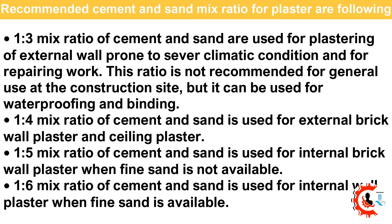Recommended cement and sand mix ratios for plaster are as follows. 1:3 mix ratio is used for plastering of external walls prone to severe climatic conditions and for repairing work; it is not recommended for general use but can be used for waterproofing and binding. 1:4 is used for external brick wall plaster and ceiling plaster. 1:5 is used for internal brick wall plaster when fine sand is not available. 1:6 is used for internal wall plaster when fine sand is available.